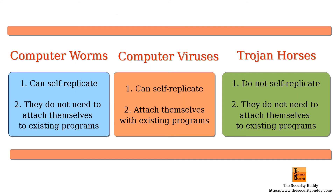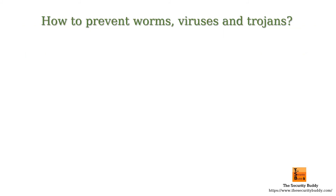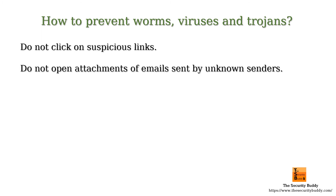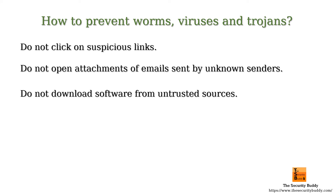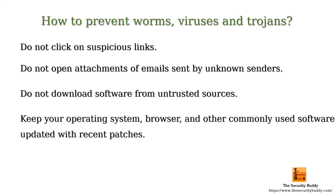To summarize, those are the key differences between a computer worm, virus, and trojan. To prevent them: do not click on suspicious links, do not open attachments from emails sent by unknown senders, do not download software from untrusted sources, and keep your operating system, browser, and other commonly used software updated with recent patches — the more updated the software, the fewer known security vulnerabilities it has.